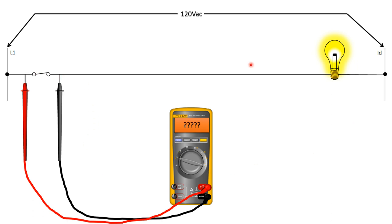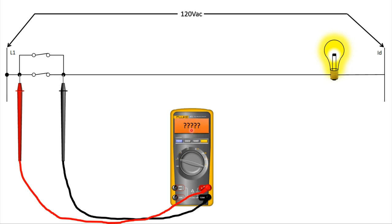Next situation: we have our switch closed and our light bulb energized. What do we expect to see across this closed switch? Very low impedance across the switch means we should see very low voltage — essentially zero. My red lead is at the potential of line one and my black lead is also at the potential of line one, meaning there is no potential difference between these two, giving us our zero-volt reading. Now we have two switches connected in parallel controlling the same load.